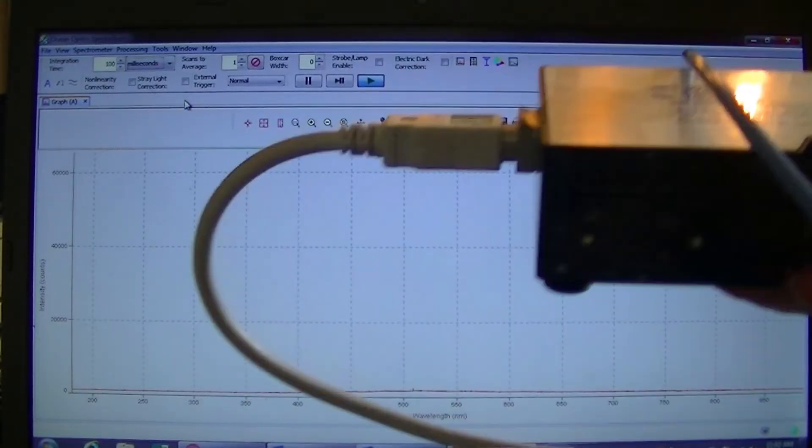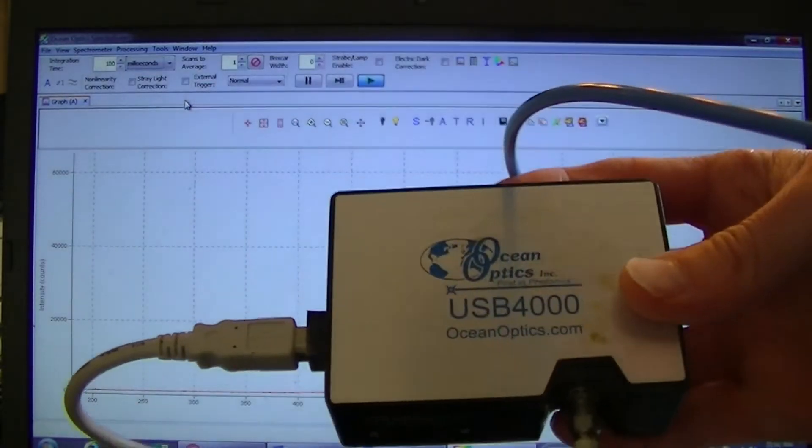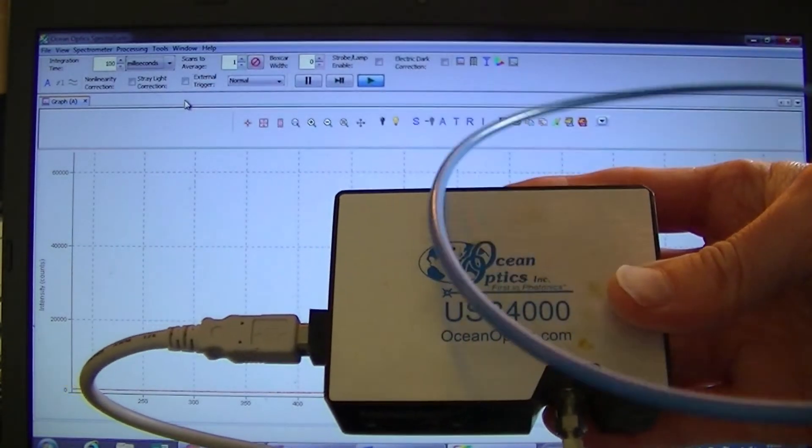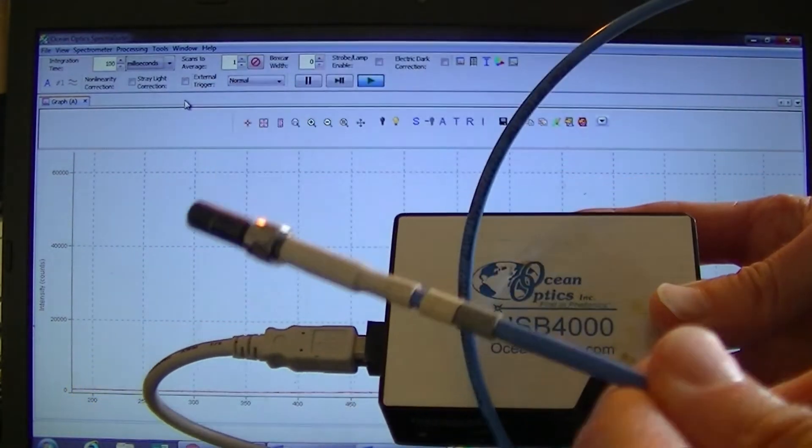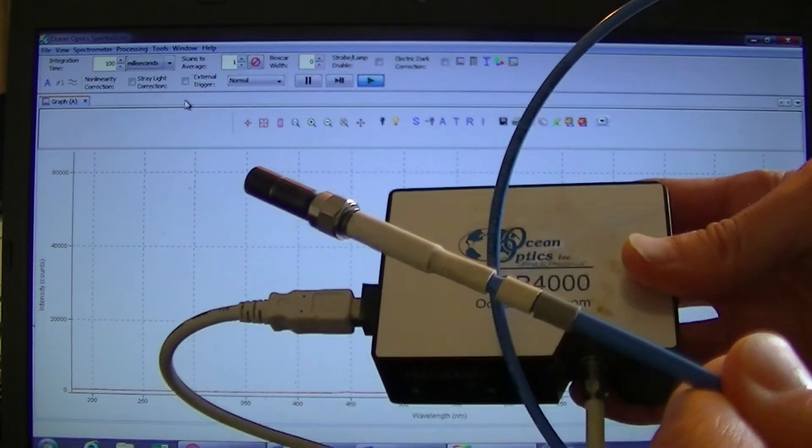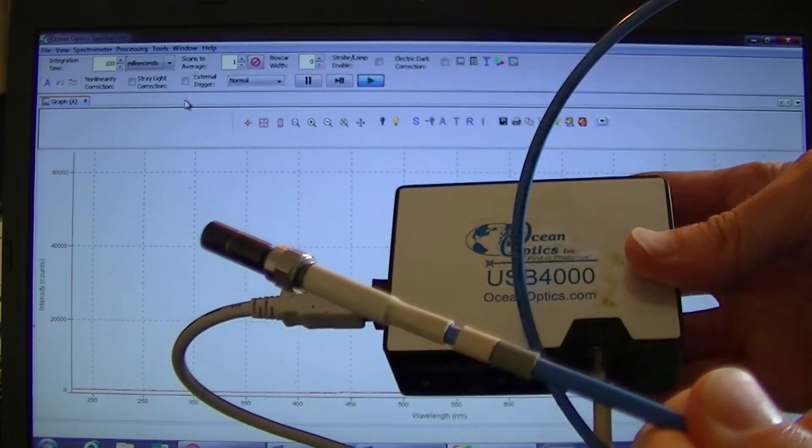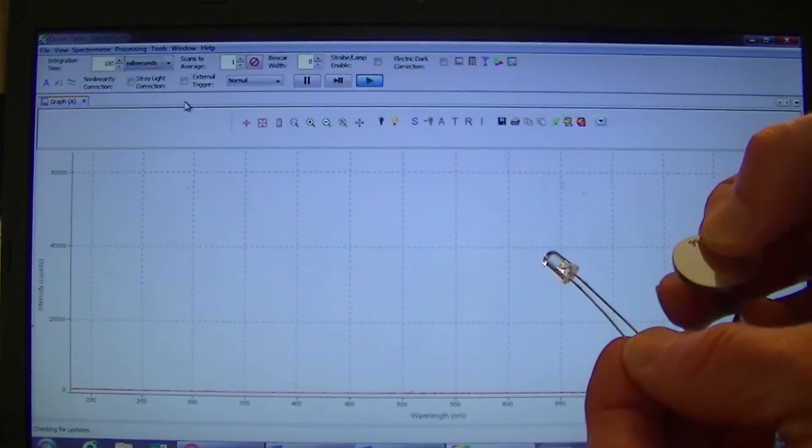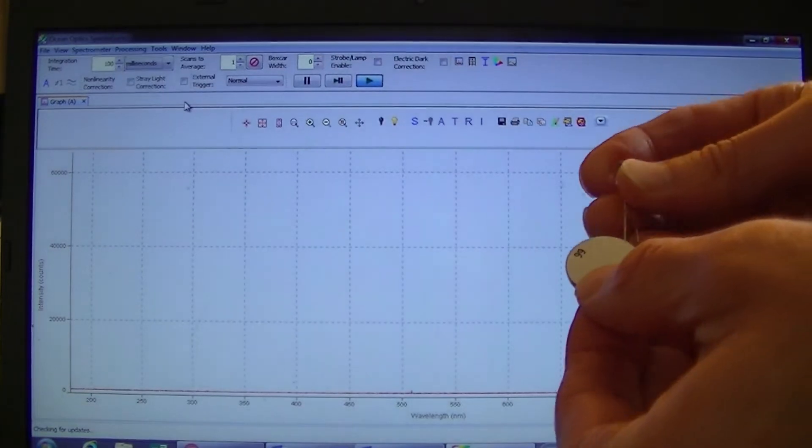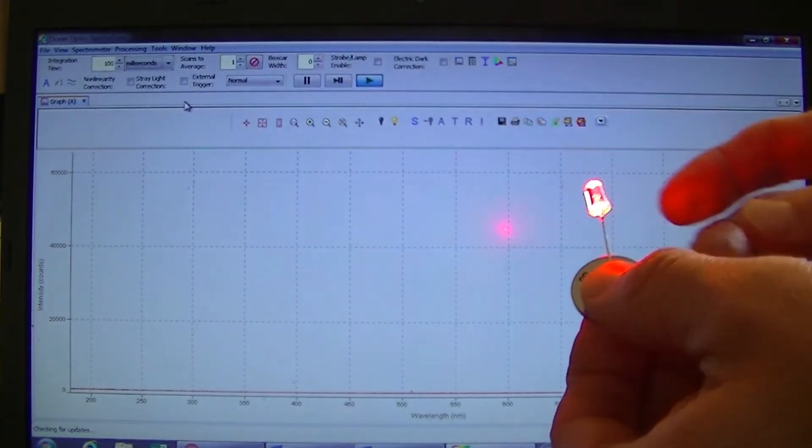Measuring the wavelength of light given off by various sources can be done quickly with an emission spectrometer, which is shown here. A fiber optic is used to collect light from a source we wish to test, and this light is sent through the emission spectrometer. Among other things, the spectrometer contains a diffraction grating to measure the wavelength.